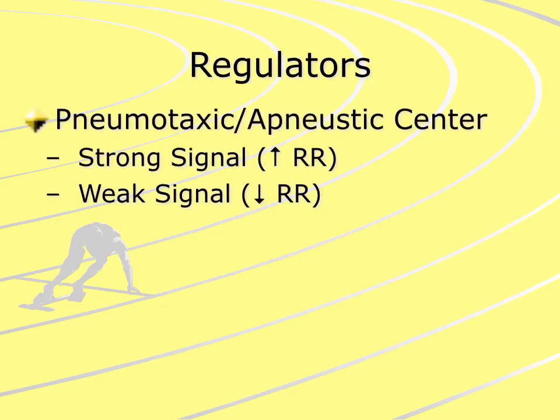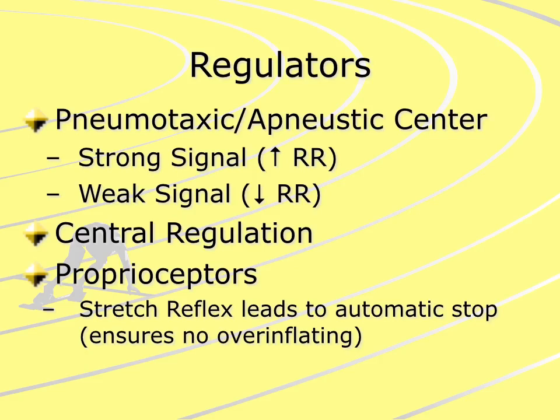We have distinct regulators for normal ventilation. In the aponeustic and pneumotaxic centers, we'll get a change in signaling where we'll either increase or decrease the respiratory rate based on the signals heading to them. We also have central regulation such as thought or cognition patterning, and proprioceptors — the principal proprioceptors in normal respiration being an automatic stop to ensure we don't have overinflation of the lungs.